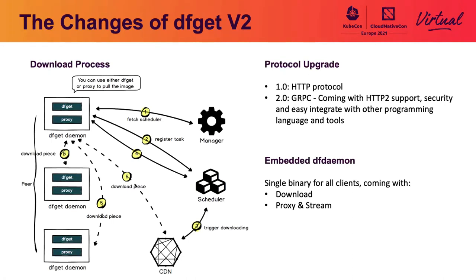The second change is the integration protocol. In V1, DFGET calls SuperNode with HTTP protocol. Now in V2, all actions are done by gRPC, bringing HTTP support, security, and easy integration with other programming languages and tools. Third change is the embedded DF Daemon. In V1, DF Daemon is a process that accepts HTTP proxy requests and transfers them to the DFGET command — due to one-process-per-request design, one DF Daemon cannot handle thousands of requests. Now in V2, DFGET comes with DF Daemon, and all requests are processed in one DFGET daemon supporting thousands of requests.